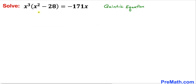Let's go ahead and get started with the solution. The very first thing we are going to do is distribute. So therefore we are going to get x⁵ minus 28x³ equals negative 171x.